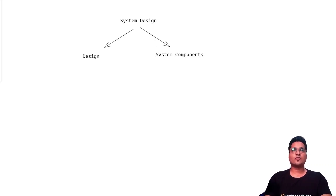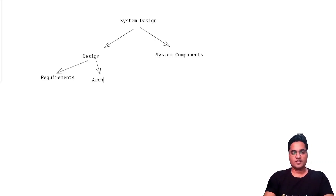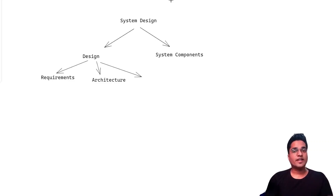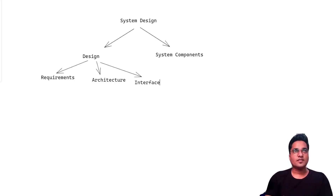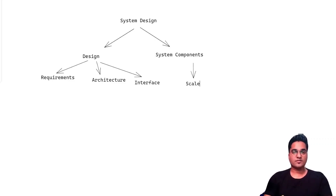What are the important things when we talk about system design? The first important thing is requirements — you should know what the requirements are when you are designing. The next important thing is the interface. And your system should be scalable — you should be able to scale it up as it grows.